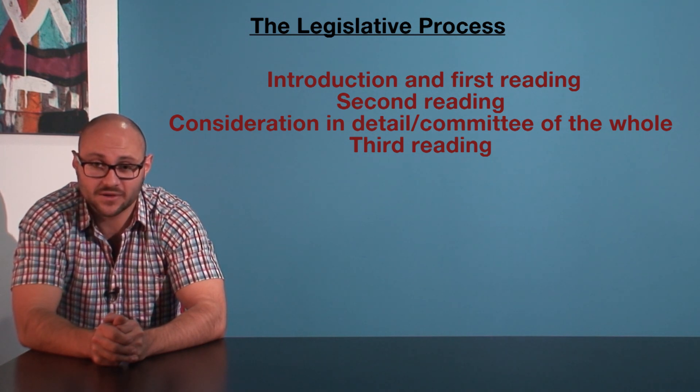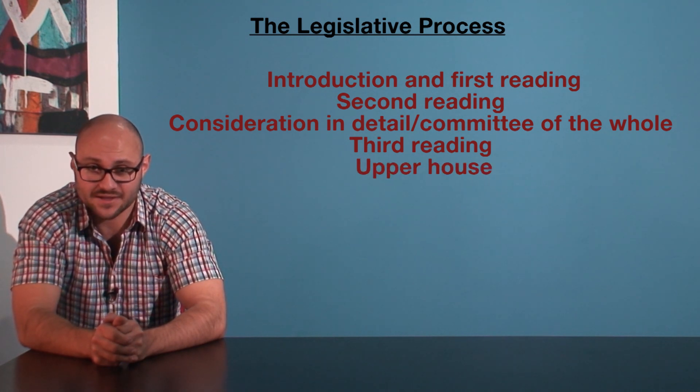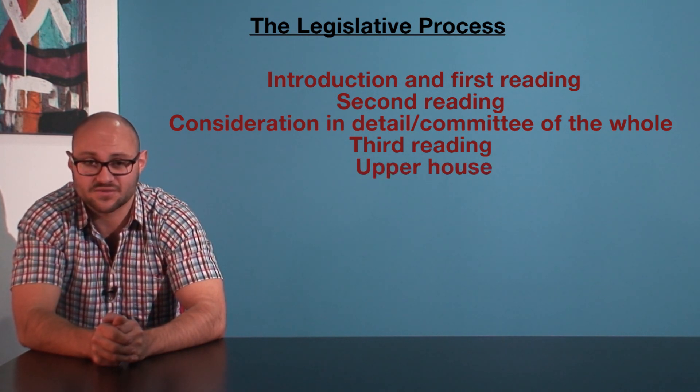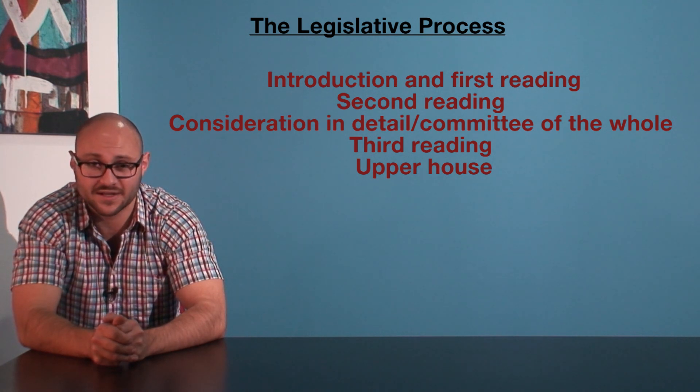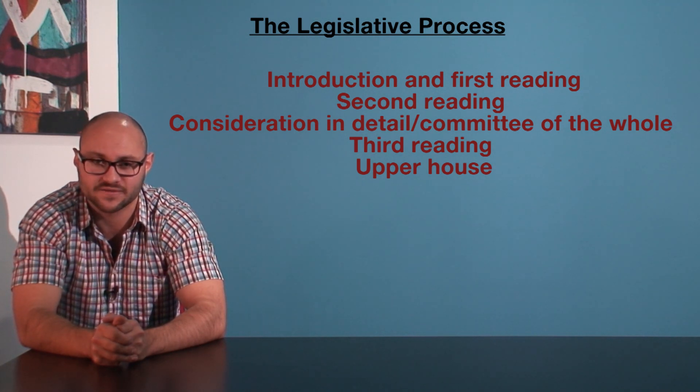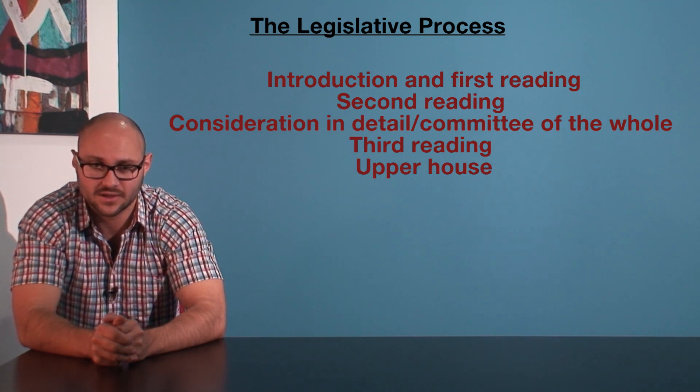Then the bill goes to the upper house and the whole process is repeated. However, if the upper house amends the bill in any way, it has to go back to the lower house for approval.